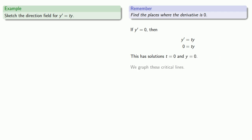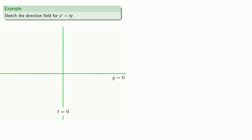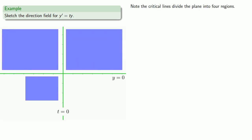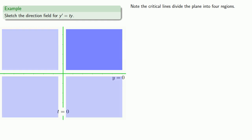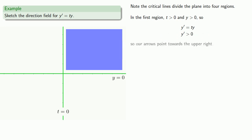So we'll graph these critical lines. The critical lines divide the plane into four regions. In the first region, t is greater than 0 and y is greater than 0, so our derivative is going to be greater than 0. So our direction arrow will point towards the upper right.